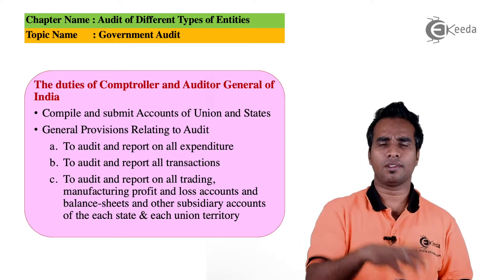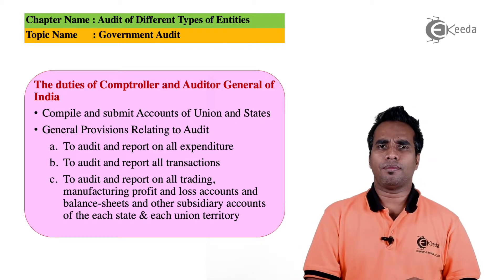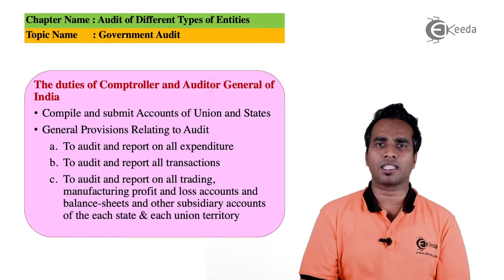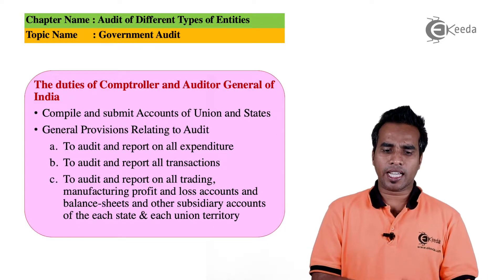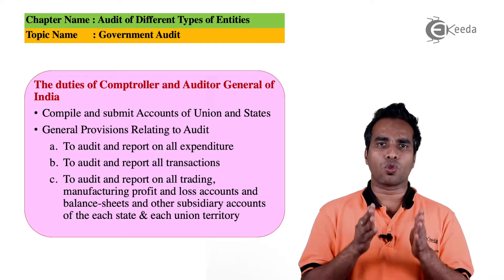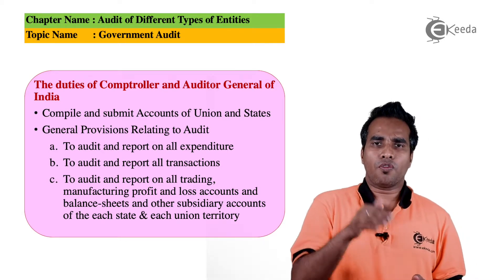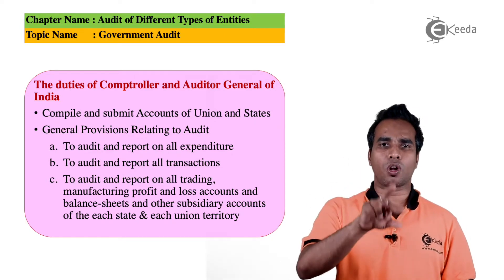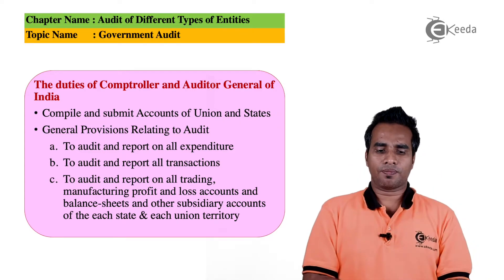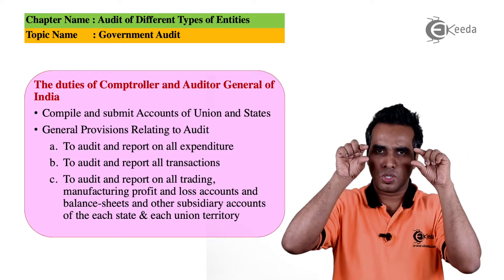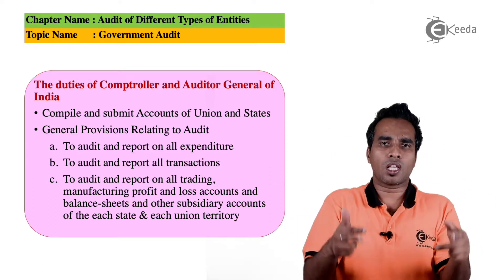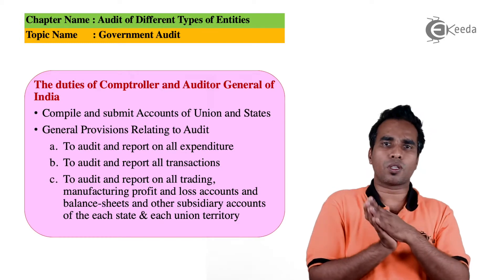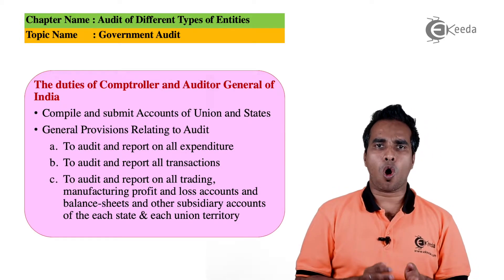Now talking about the duties of CAG. First, CAG compiles and submits the accounts of the Union and State governments — all of India's accounts. CAG's duties include general provisions relating to audit: audit of all incomes, all expenses, and all transactions. Also, audit of receipt and expenditure of the government.